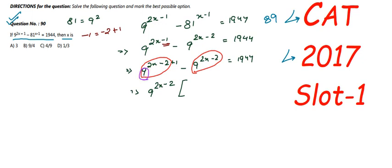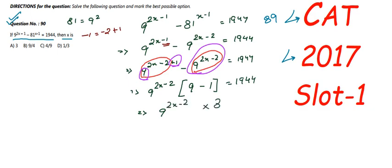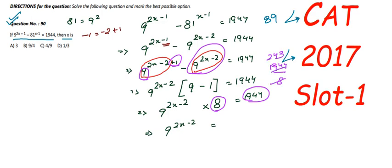Taking 9^(2x−2) common, we are left with 9^1 in the first term, and nothing from the second term, so we are left with 1. This gives 9^(2x−2) into (9 minus 1) equals 1944, that is 9^(2x−2) times 8 equals 1944. Dividing both sides by 8, the eights cancel.